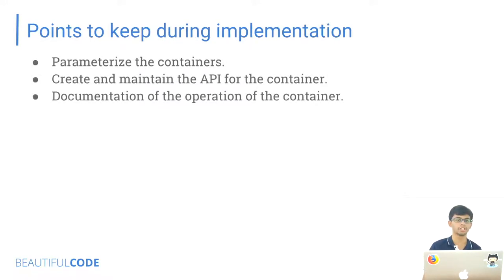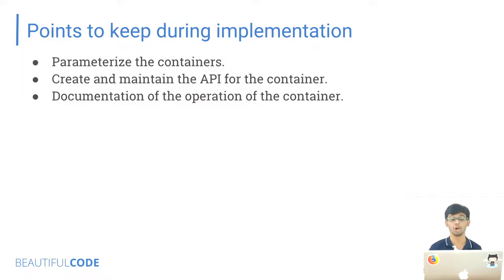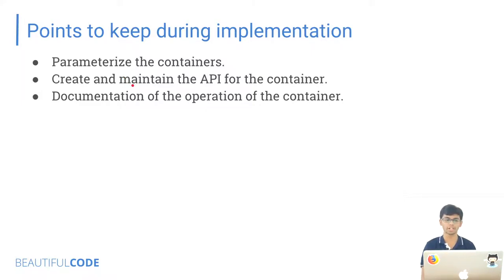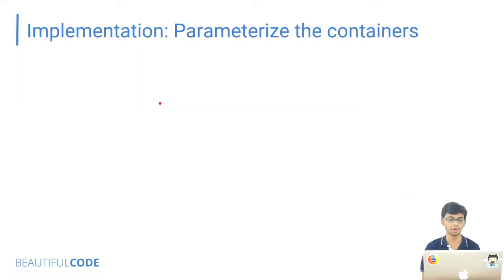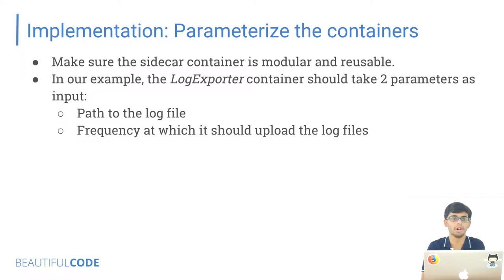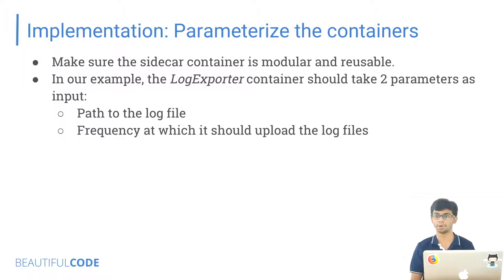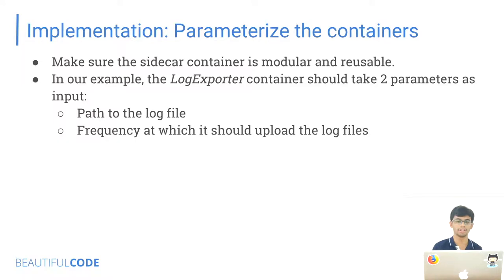Points to keep in mind during implementation: you want to make it easy for other people to use the sidecar container. It's better to follow three principles: parameterize your containers, create and maintain the API for the container, and document the operation of the container. For parameterization, you should accept parameters for your container — in our example, these could be the location of your log file or the frequency at which it should upload the log file.